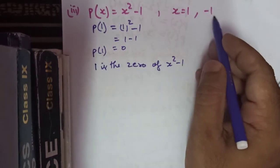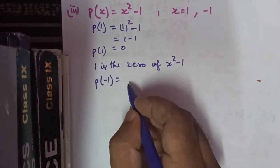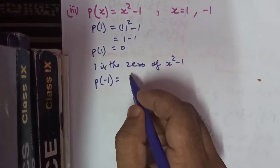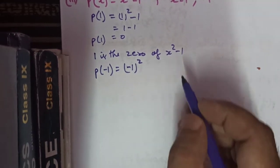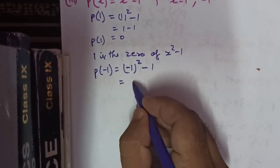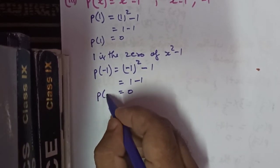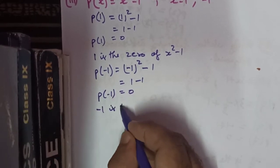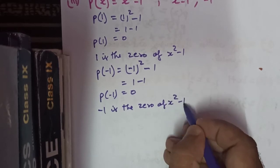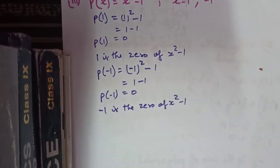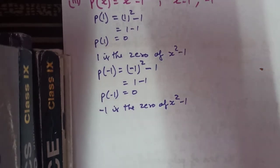Now we test whether minus 1 is also a zero. We find p(minus 1): x squared becomes square of minus 1, which is plus 1, minus 1. So 1 minus 1 equals 0. Since p(minus 1) equals 0, minus 1 is the zero of the polynomial x squared minus 1. So both 1 and minus 1 are the zeros of the quadratic polynomial x squared minus 1.